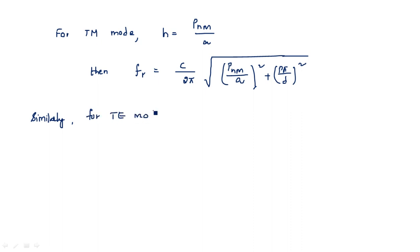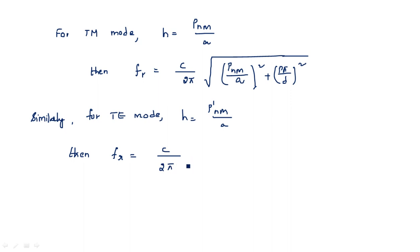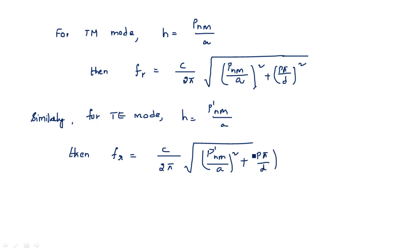Similarly, for TE mode, h = p'nm/a, where p'nm is the derivative Bessel function root. The resonant frequency is: fr = (c/2π) × √[(p'nm/a)² + (pπ/d)²]. This is the resonant frequency for the TE mode.